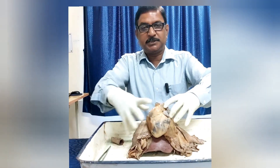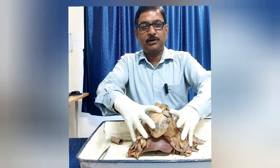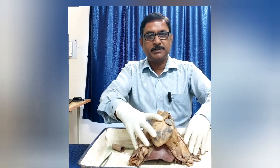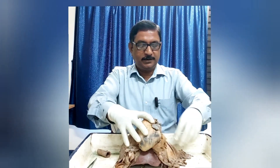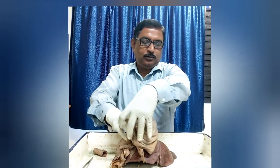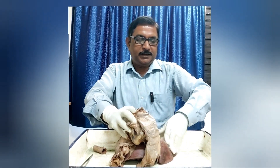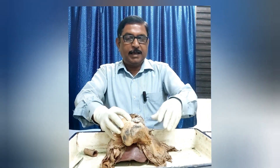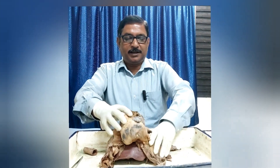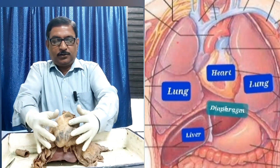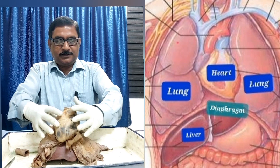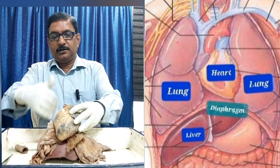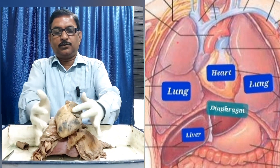You see this specimen — this is actually not a single specimen, there are three specimens. The heart is there, then below the liver is there, and in between the diaphragm is there. On each side there are two lungs, one lung on this side and one lung on this side.